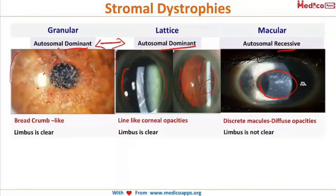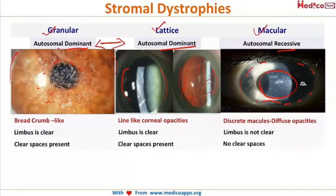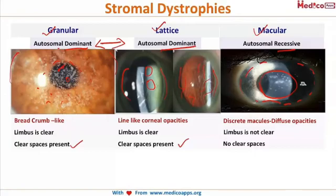In granular and lattice dystrophies, the limbus is clear, and there are clear spaces in the cornea — so vision is not much affected. However, in macular dystrophy, the limbus is also opaque and the entire cornea is involved with no clear spaces, so vision is significantly affected.